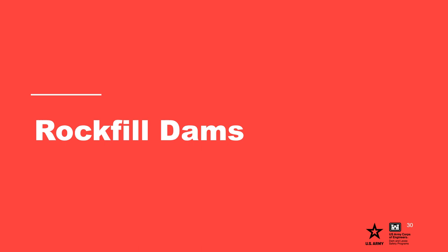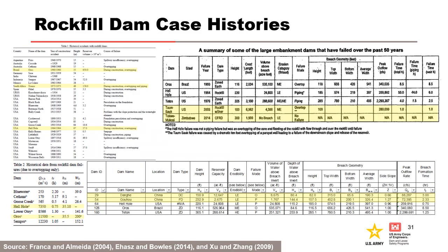Breaching of rock fill dams is different than earthen fill dams. This section will summarize the current understanding of the process and provide some suggested guidance and approaches for estimating breach parameters of rock fill dams. There is a small number of case histories for large rock fill dams with low erodibility, and this is likely due to the intrinsic safety of this type of dam. No modern rock fill dam has failed from internal erosion in recent times. Modern zoned central core rock fill dams are more erosion resistant than other low erodibility dams in the Xiu and Zhang 2009 dataset.